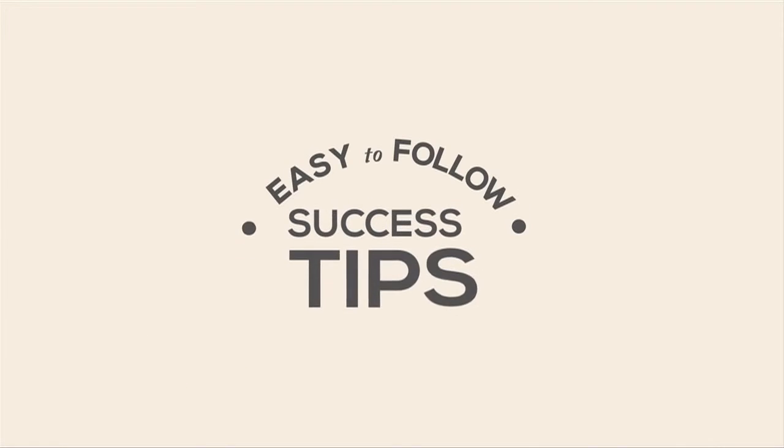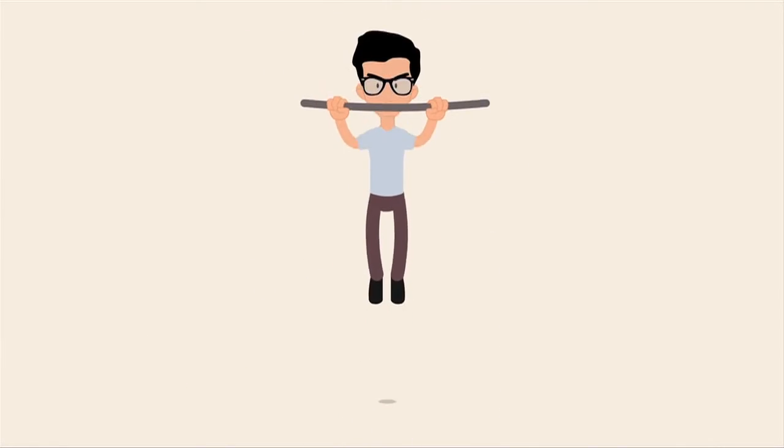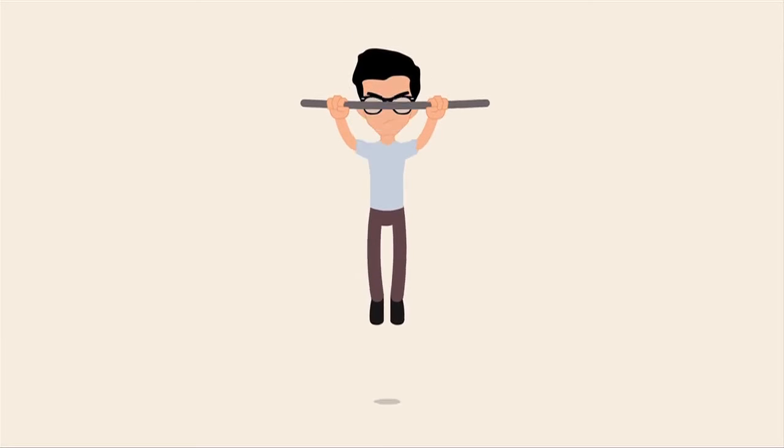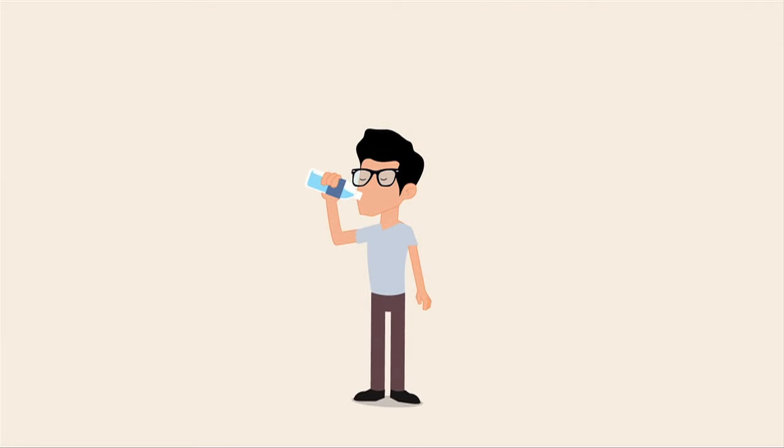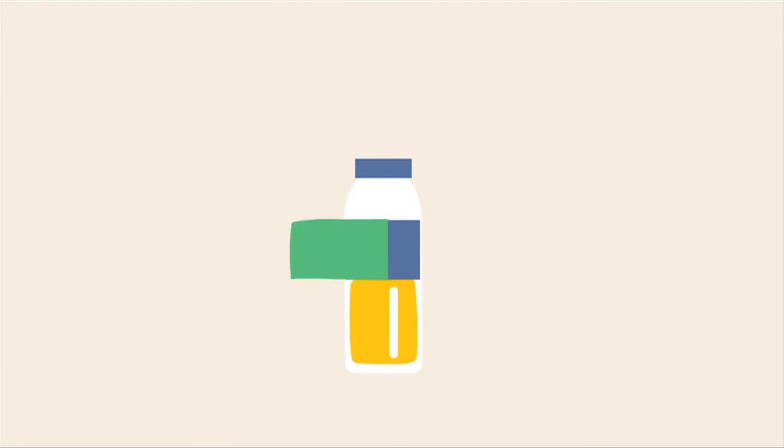Some of my easy to follow success tips. Exercise as many times as you can. Five times a week is good. Try to do something active every day. Drink more water. Read nutritional labels. If it has sugar or ingredients you can't pronounce, throw it away.